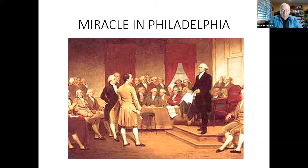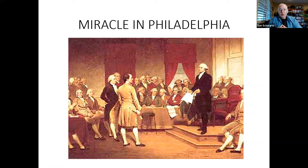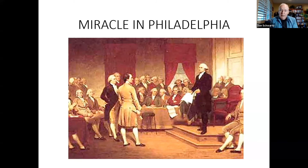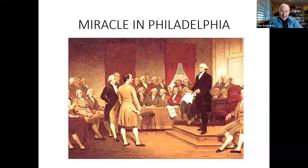The Constitutional Convention is often referred to as the miracle at Philadelphia, because it attempted to solve an unsolvable political problem: how to create a powerful central government while remaining true to the principles of 1776 — making sure that government would not abuse its powers. It attempted to create a unified nation out of 13 states with very different interests, and it was a miracle because it succeeded. 1776 declared American independence, but 1787 heralded the founding of an American nation.